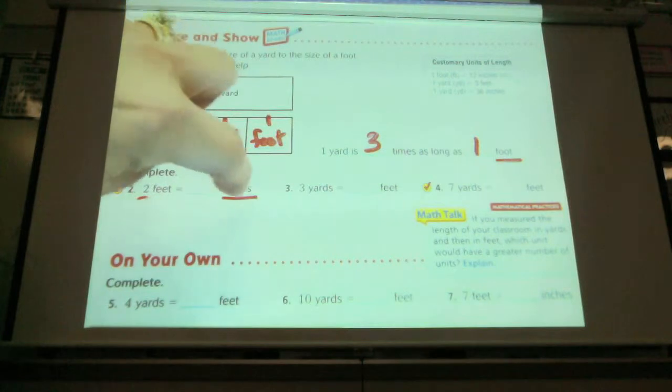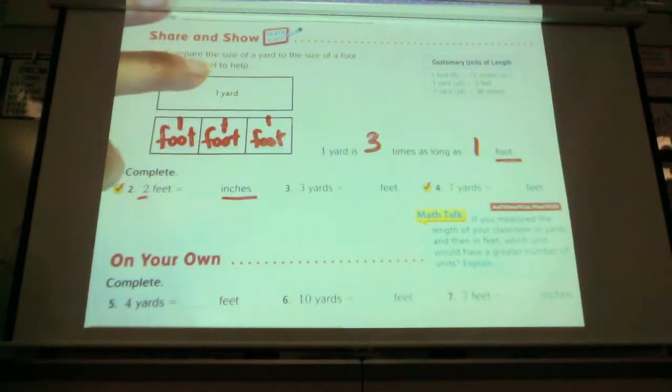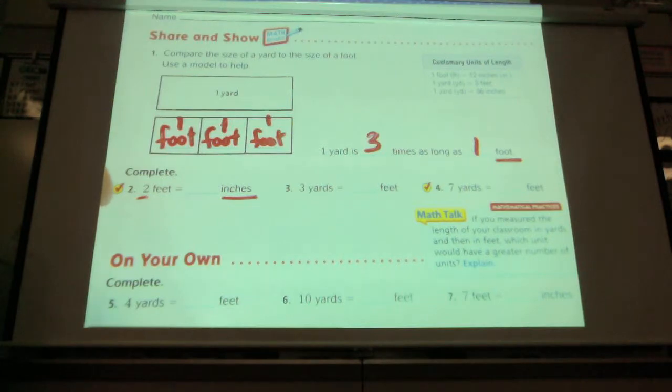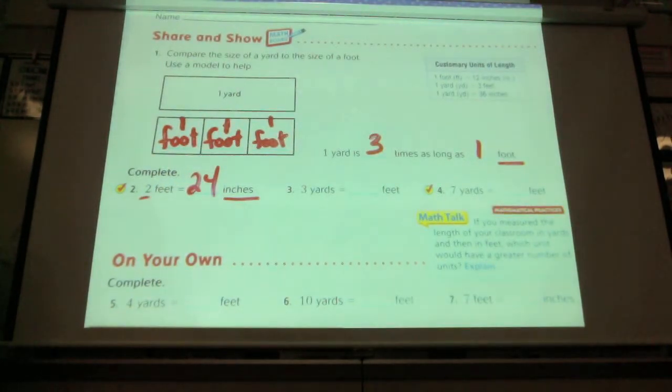I already know how feet and inches relate. Who can tell me again how do feet and inches relate? Preston. Twelve inches equal one foot. Twelve inches equal one foot. So two feet is how many inches? Twenty-four. Twenty-four. When I'm comparing yards and feet, I want you to think about how many feet are in one yard. Think about it. Talk to your neighbor. How many feet are in a yard? So how many feet are in one yard? Three. So in three yards, there's... Nine. Nine.